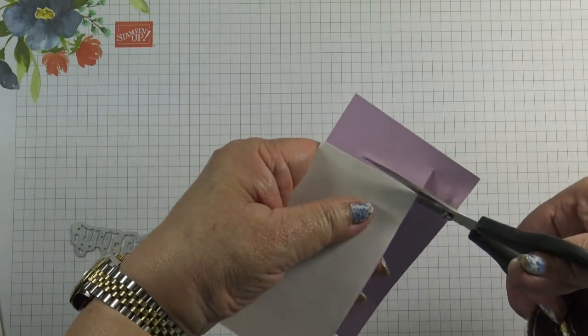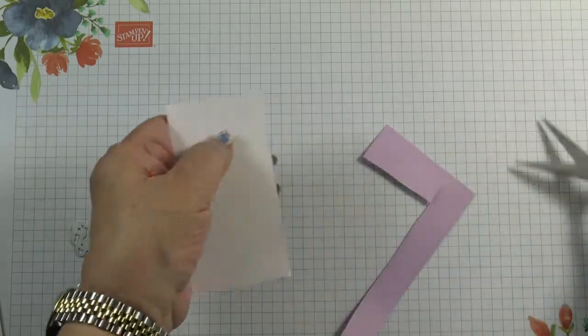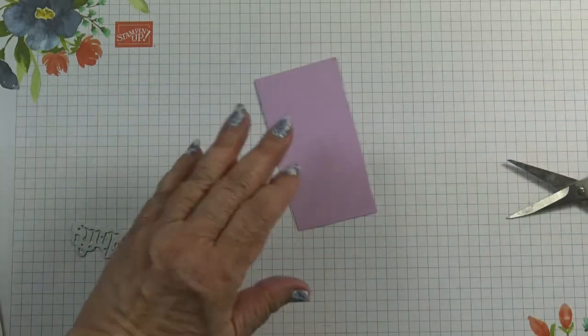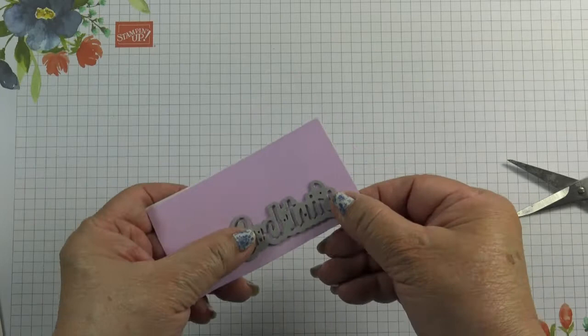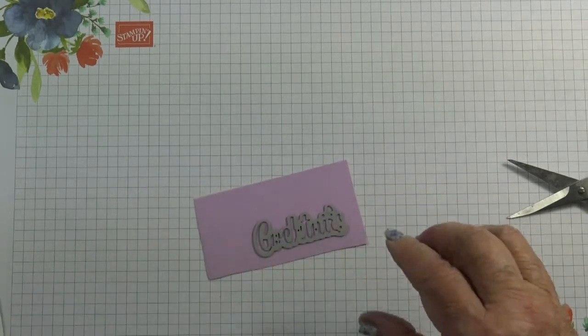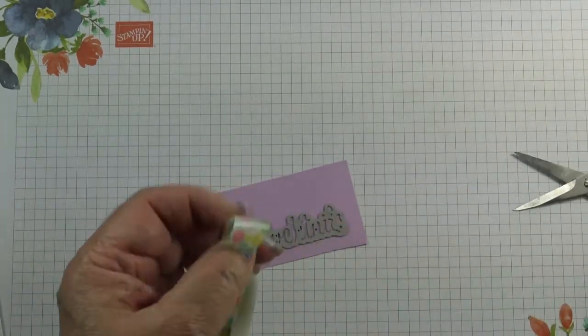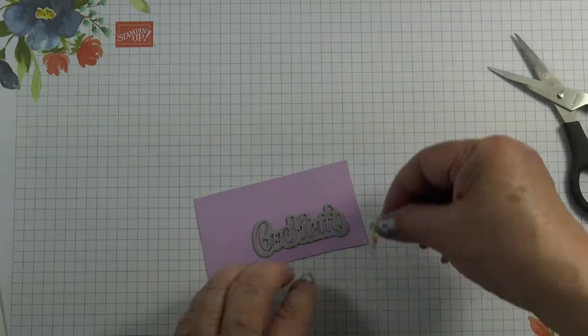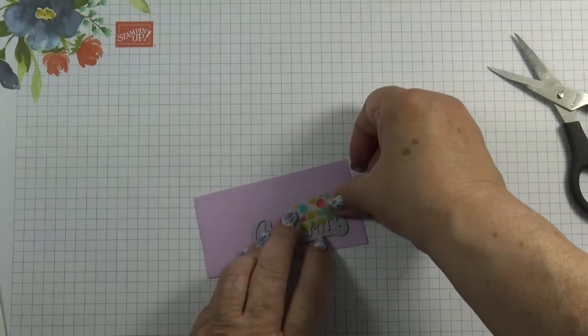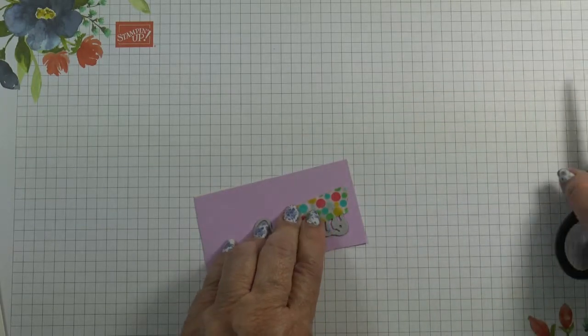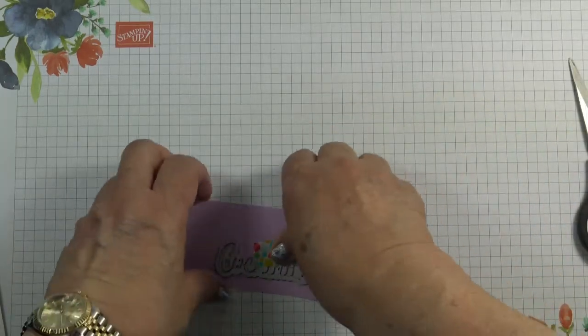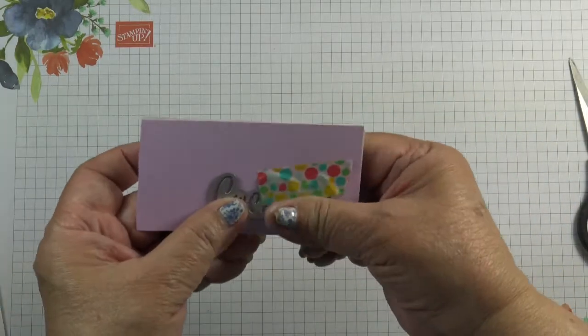Trim off the cardstock that's not covered by the adhesive sheet. Now pop your letter on and take some washi tape and make sure you cover where the I is, so it covers the I and press that down well.